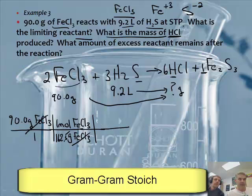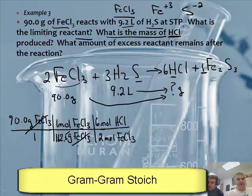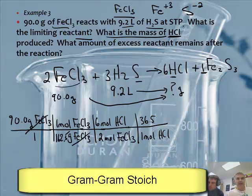Now I'm going to do the mole-to-mole ratio. There will be 6 moles of HCl per 2 moles of FeCl₃. And the grams of HCl: one mole of HCl is 36.5 grams of HCl.